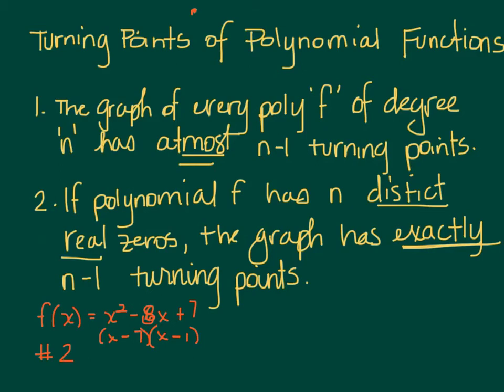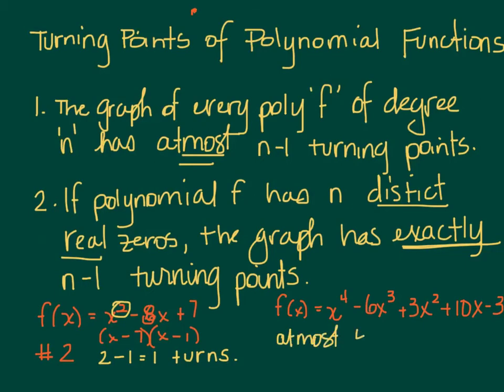I know this gives me two distinct real zeros, which means I'm dealing with number 2. So this function has n, which is my degree, n minus 1, which is 2 minus 1 turns. Exactly. As another example, if I have the polynomial x to the 4th minus 6x cubed plus 3x squared plus 10x minus 3, I have no idea if it will factor if there is one and I can synthetic divide down. So I know at most it has 4 minus 1, 3 turns at most.